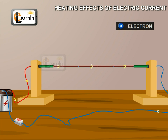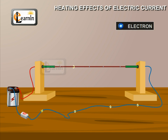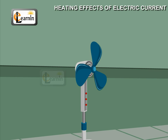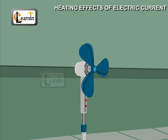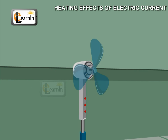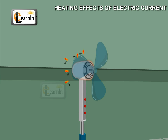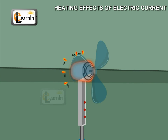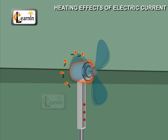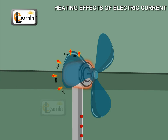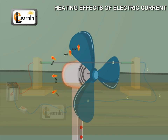However, a part of this source energy in maintaining the current may be consumed in useful work, like rotating the blades of an electric fan. The rest of the source energy may be expended as heat to raise the temperature of the gadget. We often observe this in our daily lives — for example, an electric fan becomes warm if used continuously for a long time.